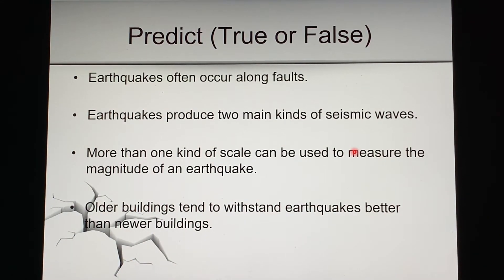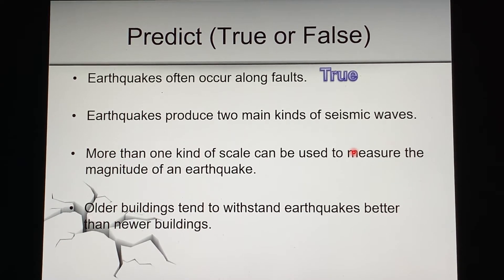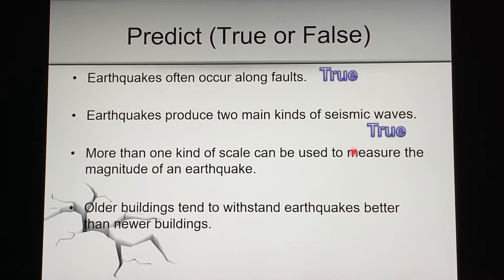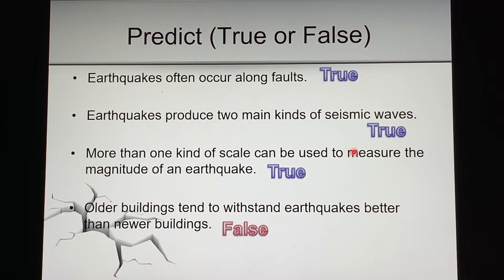True or false: earthquakes often occur along faults — true. Earthquakes produce two main kinds of seismic waves — also true: those are primary waves and secondary waves. More than one kind of scale can be used to measure the magnitude of an earthquake — still true. And older buildings tend to withstand earthquakes better than newer buildings — that's definitely false, and we'll see why right now.